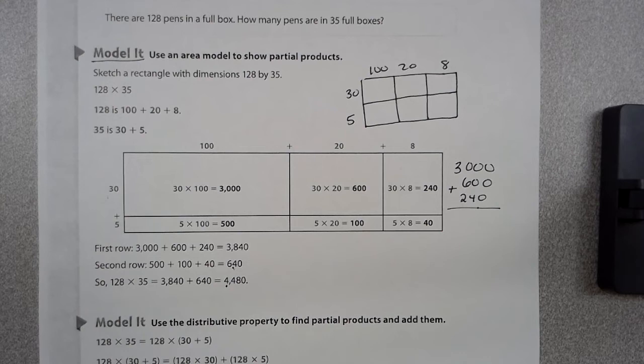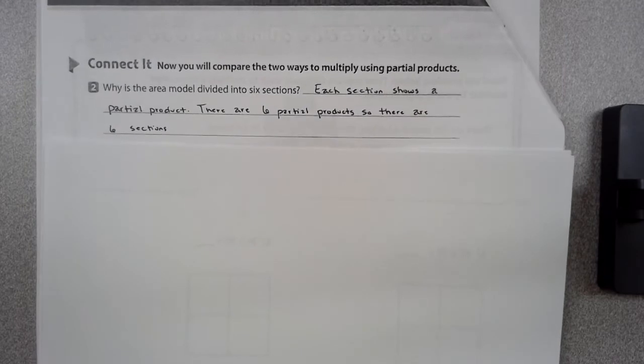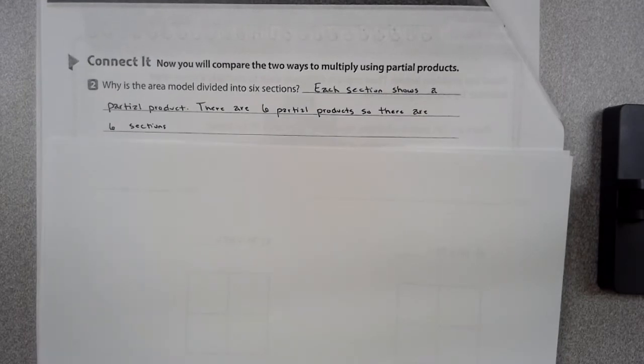It's divided into six sections to show a partial product because each section shows a partial product. There are six partial products, so there are six sections. Pause your video to write your answer.